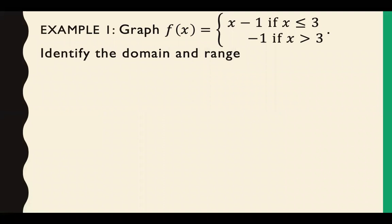So here we have our first example. Graph f of x equals x minus 1 if x is less than or equal to 3 and negative 1 if x is greater than 3, then identify the domain and range. This type of function is special because we call it a piecewise function because to make this function, we are taking pieces of other functions.